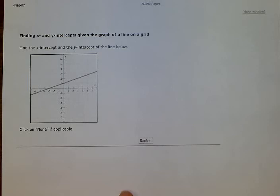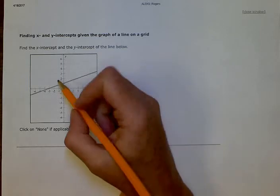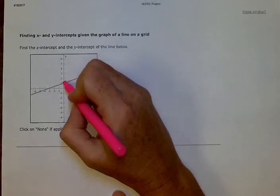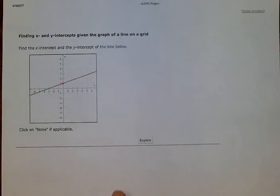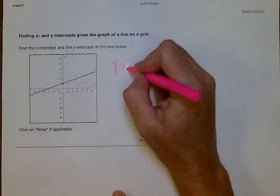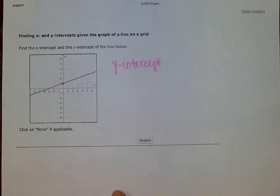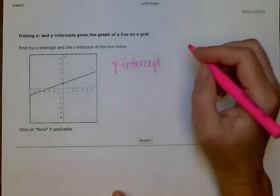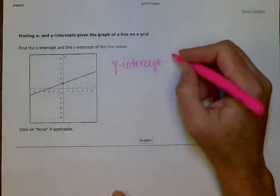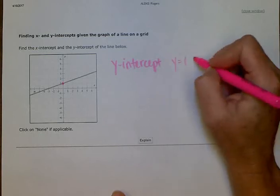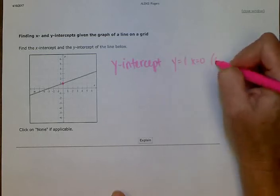So a y-intercept is where the line crosses the y-axis. Actually, I'm going to use my highlighter. So it is right here at this point. That is a y-intercept because it crosses the y-axis. So that is at the point where y equals 1 and x is 0. So we actually have a point that looks like this: 0, 1.